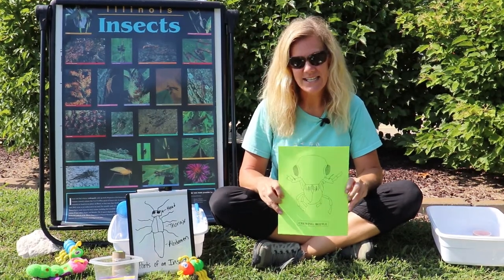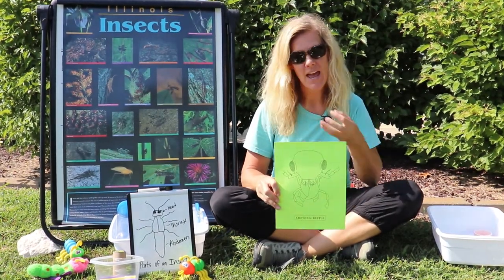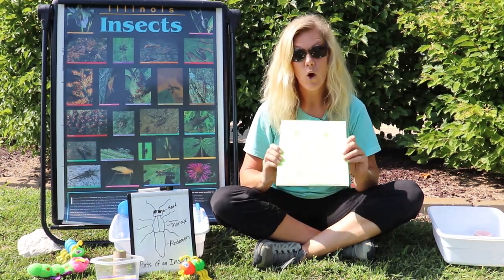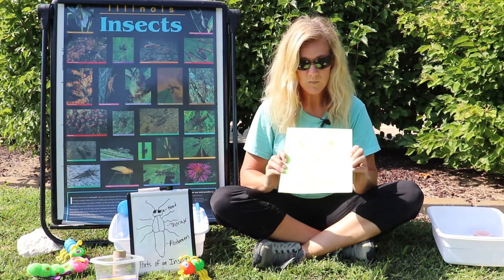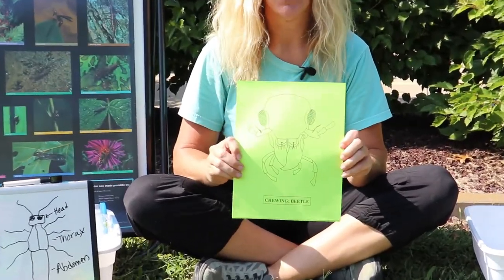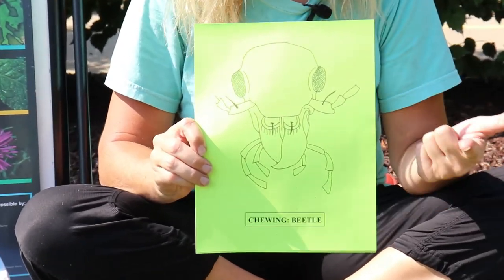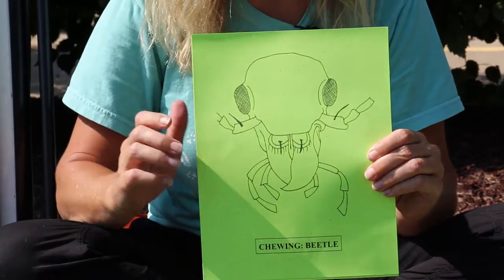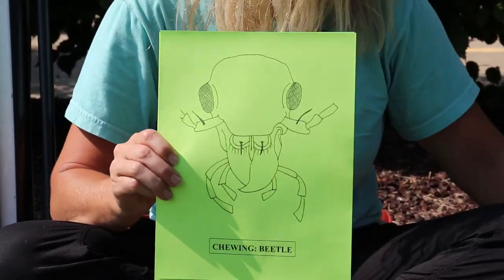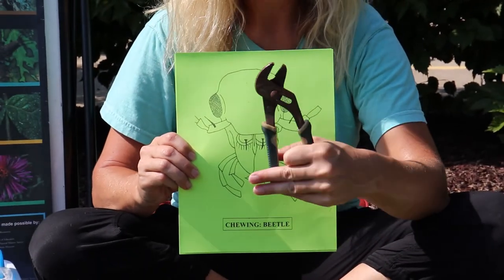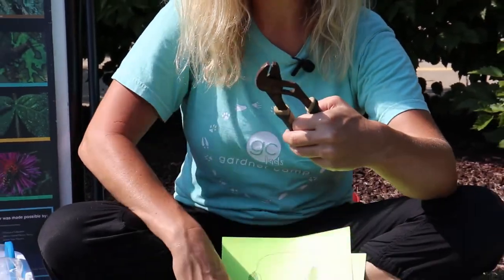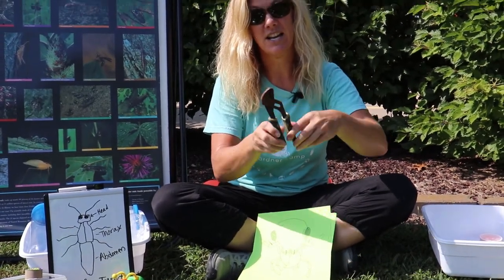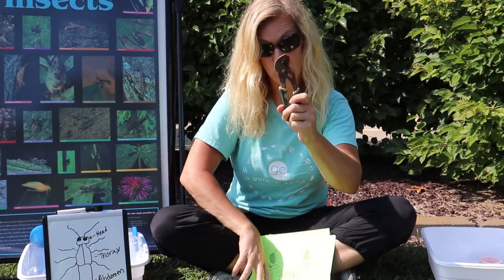Insects have very intricate details. On their head they have mouth parts, and mouth parts differentiate between all different types of insects. Beetles have a chewing mouth part, and so do grasshoppers and dragonflies — they chew up grass or plants with their mouth parts. To illustrate that, here are some pliers. Their mouth actually acts like pliers in that they are grabbing on and tearing off plant material. So the chewing mouth parts are like pliers.